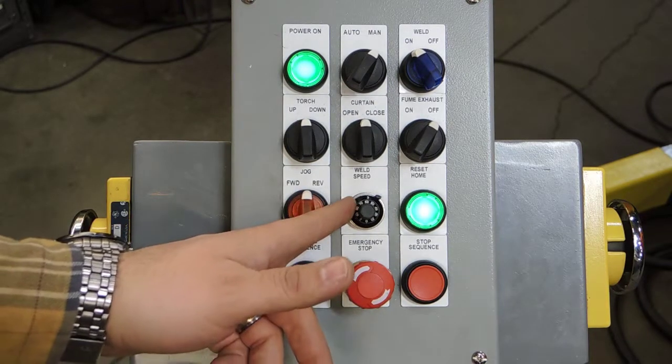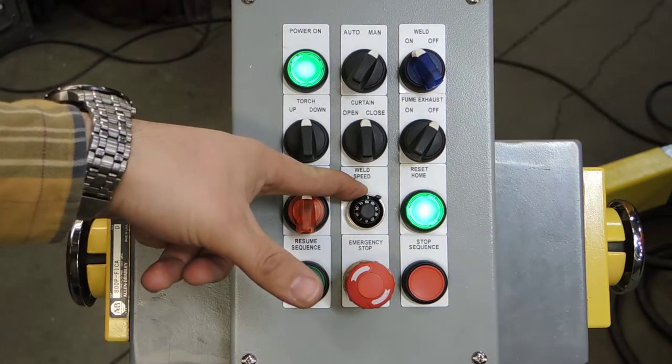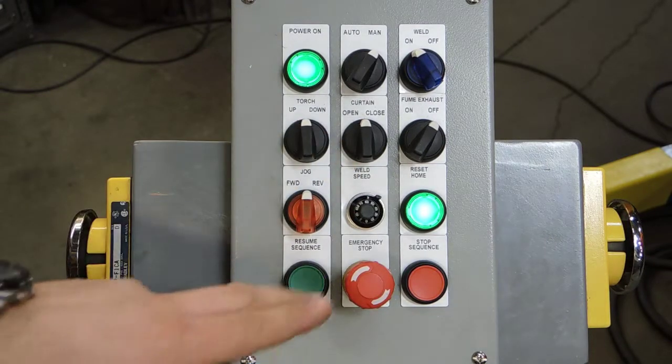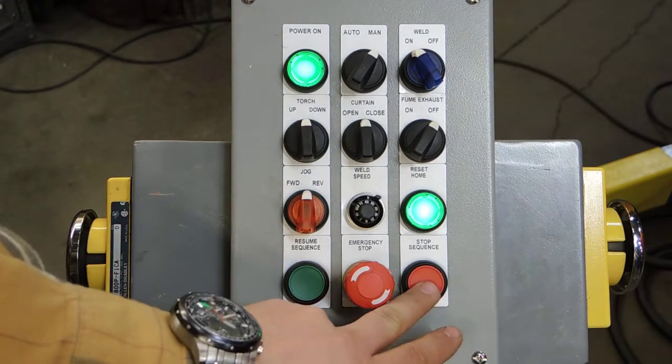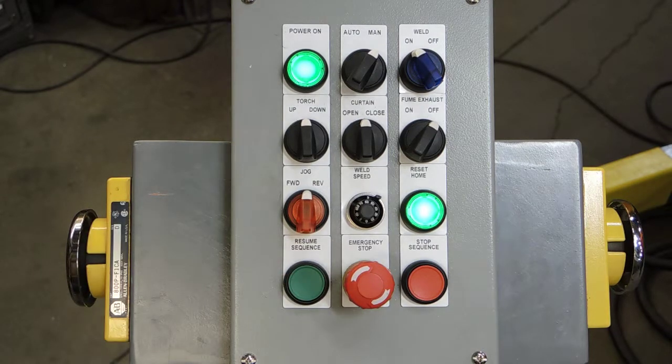We control the weld travel speed here. In between the indexes, we will ramp up to a rapid speed. The stop and resume sequence are buttons that we can use to pause and resume the weld if we need to make corrections to the part before the weld cycle is truly complete.